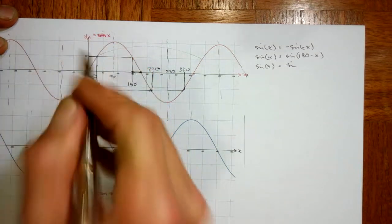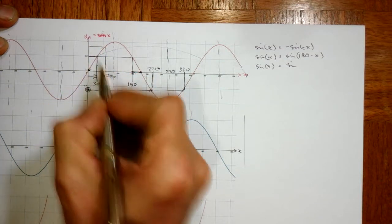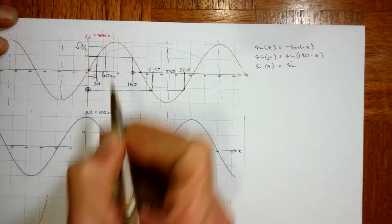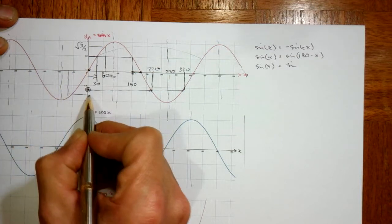If we rotate, so let's choose a value sine 60, and it's root 3 over 2. The sine of minus 60 should be minus root 3 over 2.